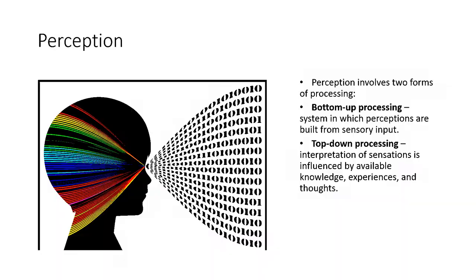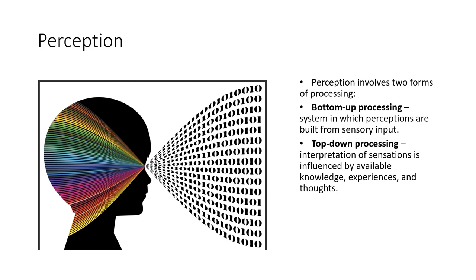Perception involves two different forms of processing. Bottom-up processing is the system in which perceptions are built from sensory input — the information you're receiving through your eyes, through your ears, for example. We receive this information, it goes to our brain, and then we perceive it.